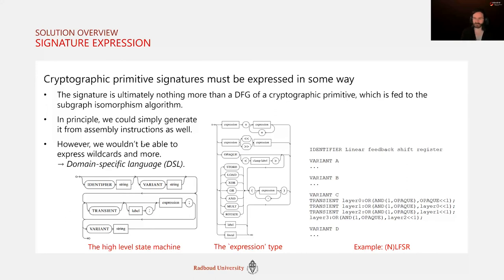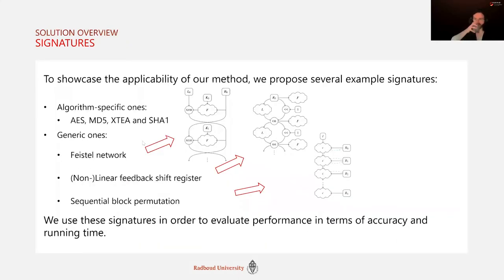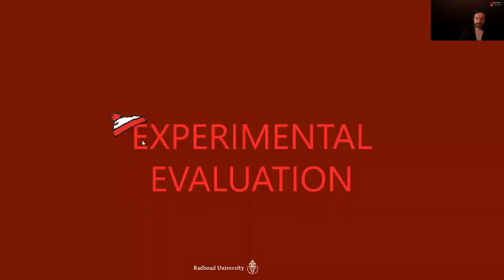The DSL allows you to identify a class with a set of variants, each defined by labeled expressions consisting of suitably nested operators and operands. We proposed several example signatures, ranging from algorithm-specific ones for AES, MD5, and so on, to generic ones for Feistel networks, linear feedback shift registers, sequential block permutations, and more. These signatures were used to evaluate our solution.